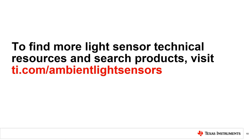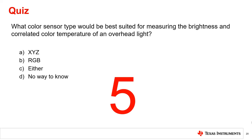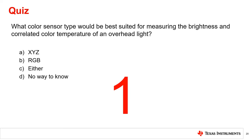To find more light sensor technical resources and search TI products, please visit the link shown. Thanks for taking the time to watch this video. Please try the following quiz: What color sensor type would be best suited for measuring the brightness and correlated color temperature of an overhead light? The correct answer is A, an XYZ color sensor. While in theory an RGB sensor could be calibrated to do this task, the XYZ color sensor will provide both a simpler way of measuring the lux and converting the reading to a color temperature.